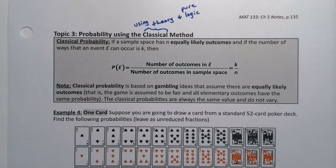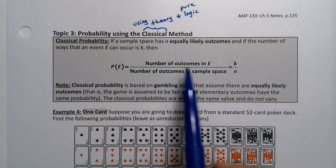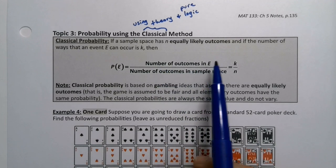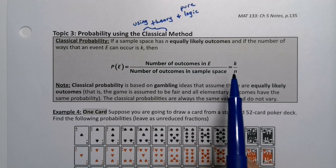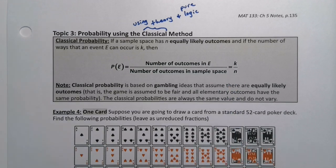So if you imagine, hypothetically speaking, the situation, you imagine how many outcomes there are in the sample space and how many outcomes there are in your event, and you divide the event ones by the sample space, and you're done. Seems easy enough in theory, but it's actually more difficult in general to find than the empirical probability.